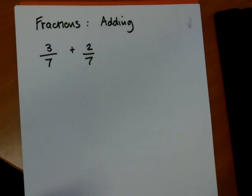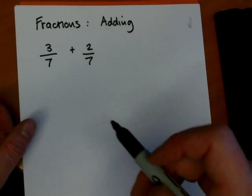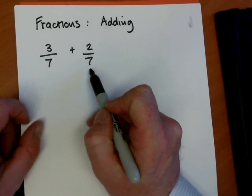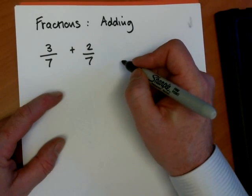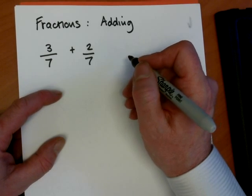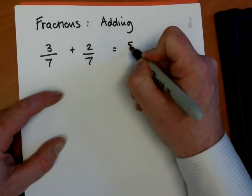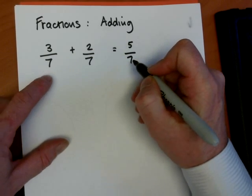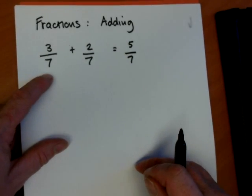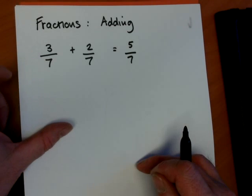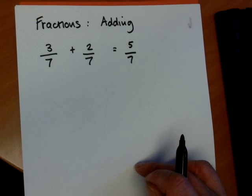Right, so if we're going to add fractions together, it's very easy, providing the denominator, the number on the bottom of the fraction, is the same. So it's like we're adding 3 apples to 2 apples and getting 5 apples. So our answer is 5 sevenths. The denominator is simply telling us what fraction we're in. The top number is telling how many of those fractions we've got. So we've got 3 sevenths plus 2 sevenths is 5 sevenths altogether.